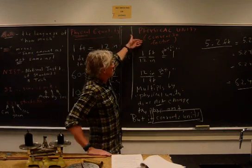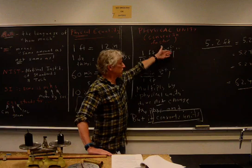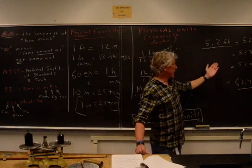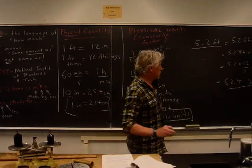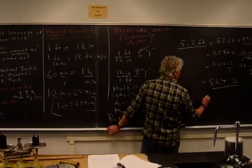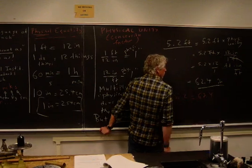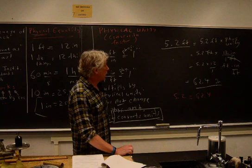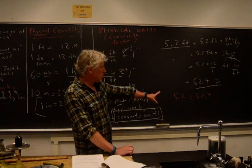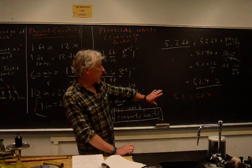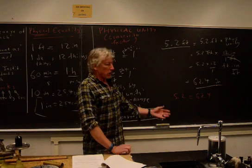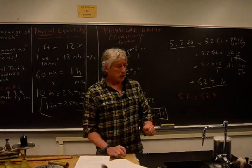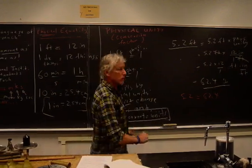A conversion factor is really multiplying by one — physical one, not numerical one. The number 5.2 is not the number 62.4, and if someone told you they were the same you'd say they're not communicating well. That's why you've got to carry the units around. We're going to do exercises on that — it's quite simple.